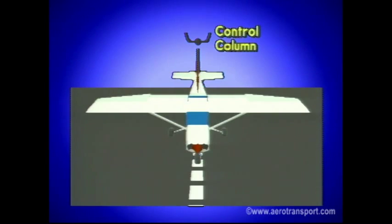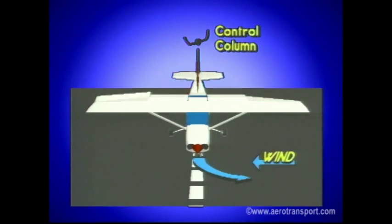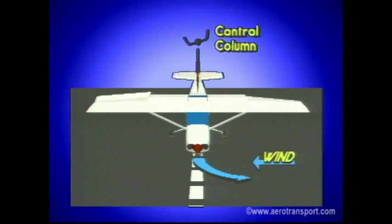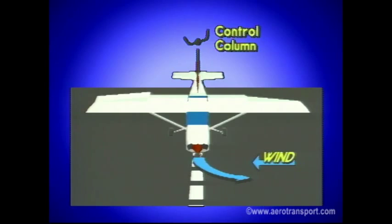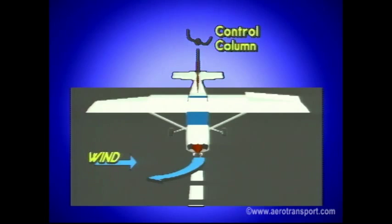Wind is the greatest variable in how you will control your aircraft while taxiing. If you are moving directly into a crosswind, turning the control column into the direction of the wind will deflect the ailerons to help you maintain directional control. Applying the rudder will help keep the aircraft from turning into the wind and maintain a straight path down the taxiway. If you want to turn while taxiing into the wind and you want to turn to the right, turn the control column to the left.